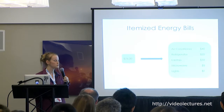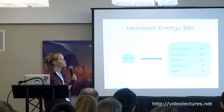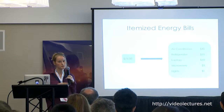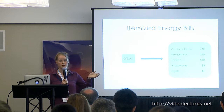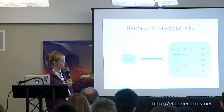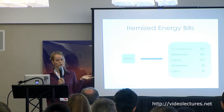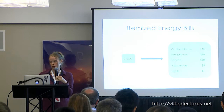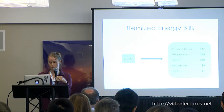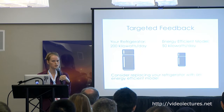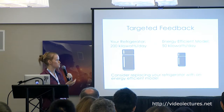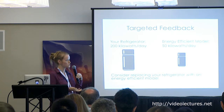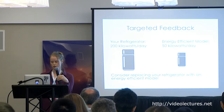With this information, you could give people itemized energy bills. Instead of being told how much your electricity costs at the end of the month, you can see how much each appliance costs you, allowing you to prioritize. For example, you might see it doesn't matter much to turn your lights on and off — maybe you should get a new refrigerator or air conditioner. You could also get targeted feedback, like being told your refrigerator uses 200 kilowatts a day and an energy-efficient model uses a lot less.